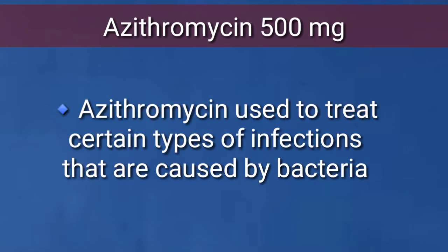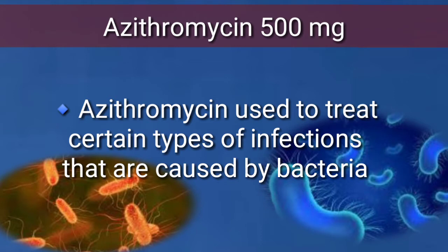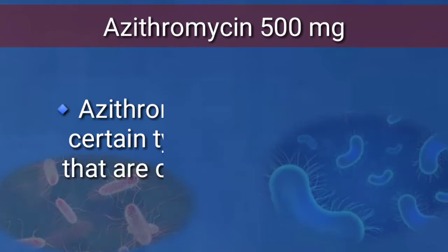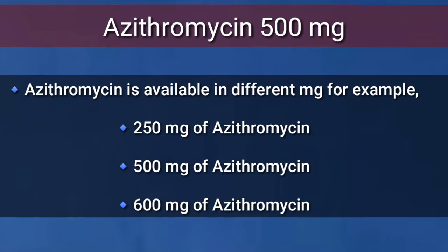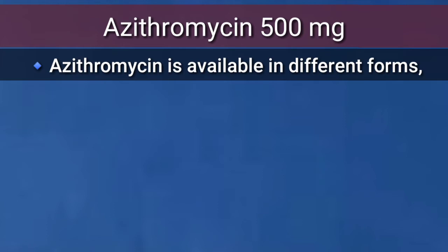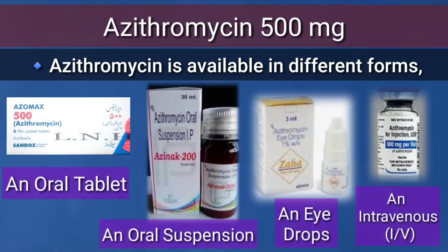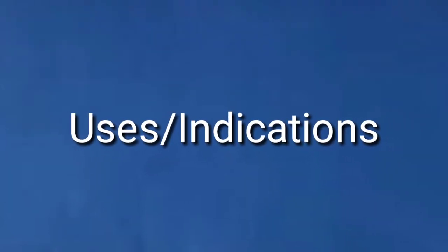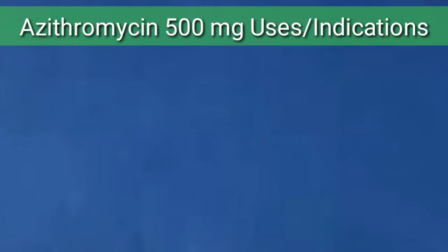It is used to treat certain types of infections caused by bacteria. Azithromycin is available in different strengths, for example 250 mg, 500 mg, and 600 mg. It is also available in different forms like an oral tablet, an oral suspension, eye drops, and intravenous (IV) given by a healthcare provider.